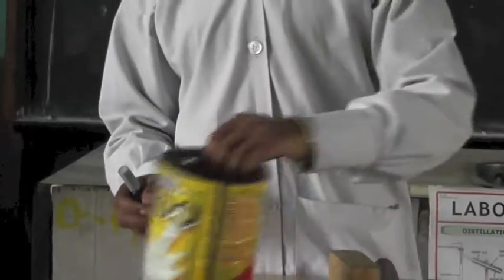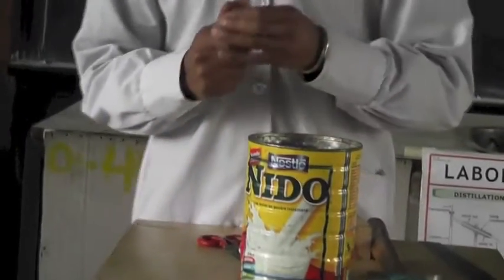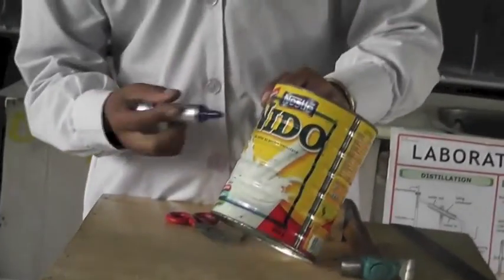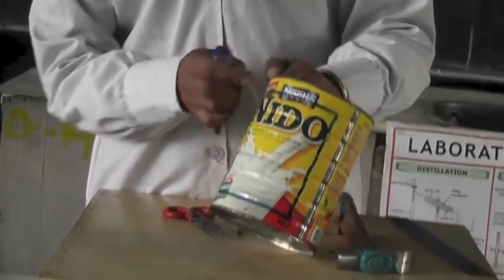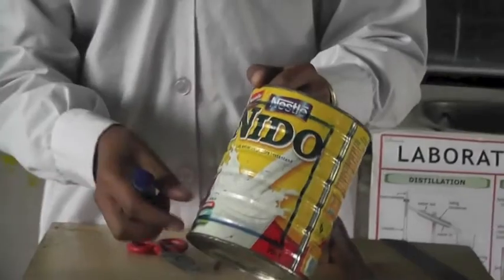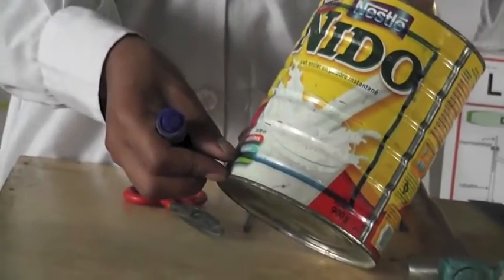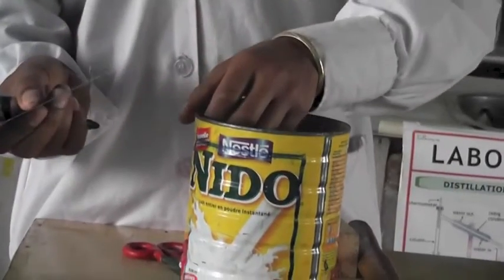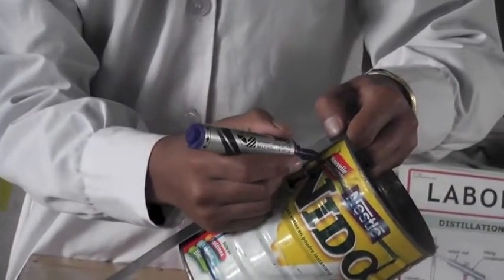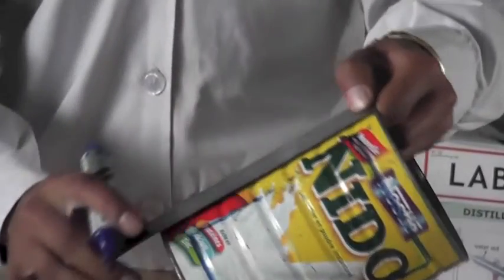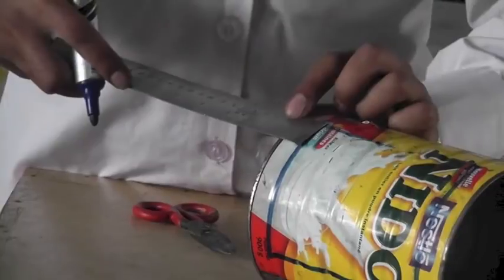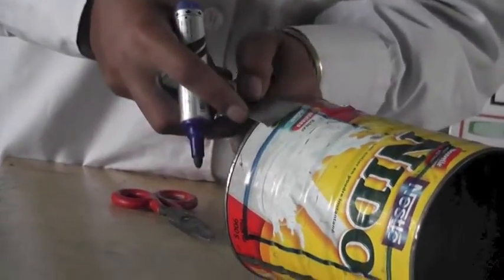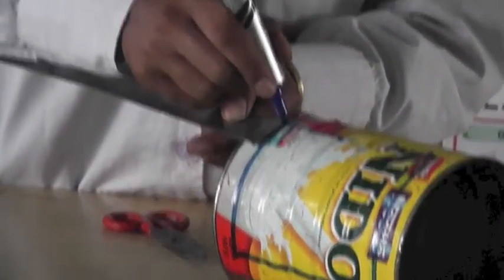The procedure: First, mark the can. Start 2 cm from the top and 2 cm from the bottom. Let's measure using the ruler. It is about 2 cm, and 2 cm from the bottom. It is about this.